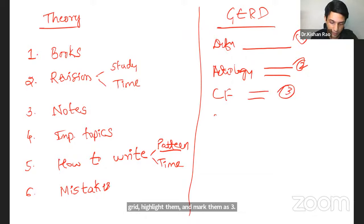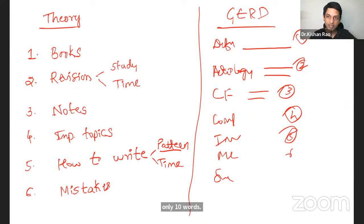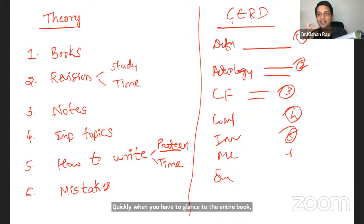Similarly, fourth one is maybe the complications of GERD, mark them four and how to, what are the investigations? The fifth, medical management, six, surgical management, seven. So, like this, 10 points you should be able to make for a 10 marker question. And, you have highlighted only 10 words or 10 keywords you have highlighted. During the revision, quickly, when you have to glance through the entire book, you'll be going through the, only those 10 points. So, hardly it will take 30 seconds to cover each topic.